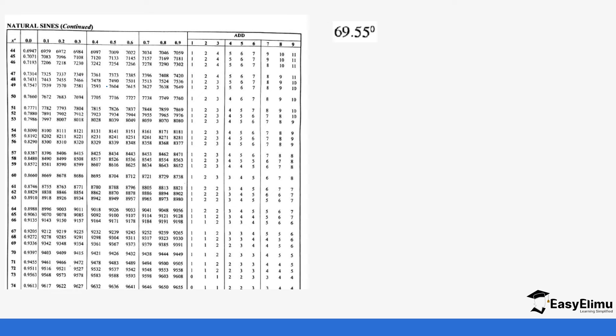Let's do another example. If you are given sine of 69.55 degrees, you're going to go to 69.5 which is going to give 0.9367, and then 0.05 you add 3, so 0.0003, which is going to be 0.9370.